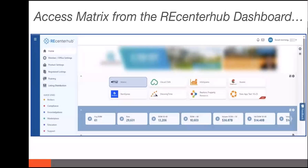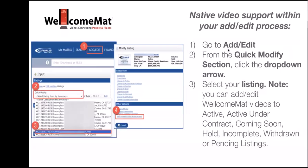To start with, I want to talk about how you access the Welcome Mat video tool set. The CRMLS team was nice enough to provide these images for me. You want to enter the ReCenter Hub dashboard and click on Matrix. Once you've done that, you'll go to Add Edit. From the Quick Modify section, you select the drop-down arrow and then select your listing. Note that you can add and edit Welcome Mat videos to active, active under contract, coming soon, hold, incomplete, withdrawn, or pending listings.